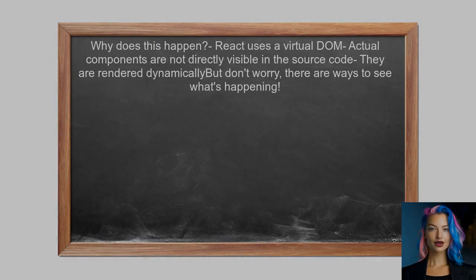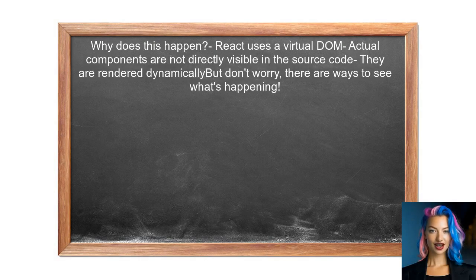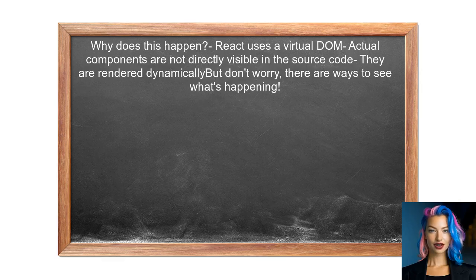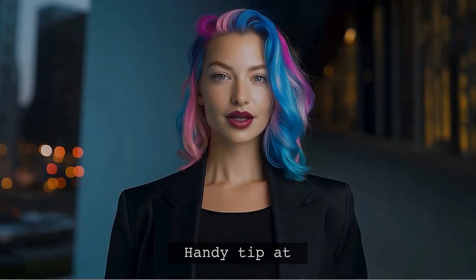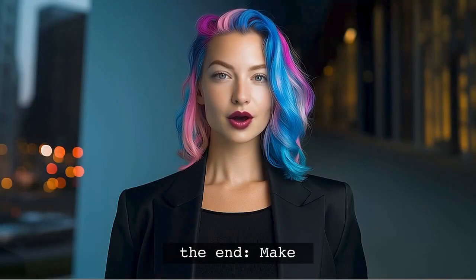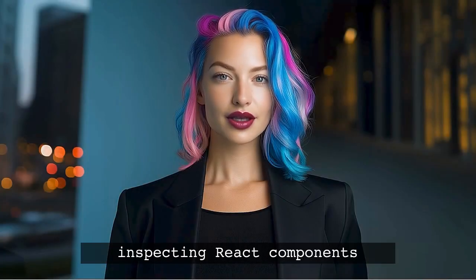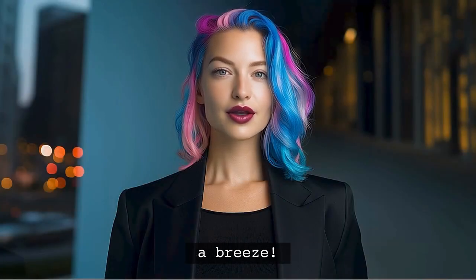So why does this happen? React uses a virtual DOM, which means the actual components are not directly visible in the source code. Instead, they are rendered dynamically. But don't worry — there are ways to see what's happening under the hood. Stick around, I have a handy tip at the end that will make inspecting React components a breeze.